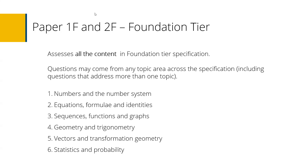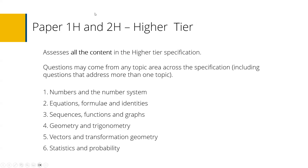For the higher tier, all content can be assessed and the topics are the same as the foundation. Questions at grades four and five are common to both foundation and higher tiers — that's the crossover. The last 40 marks of the foundation paper will be the first 40 marks of the higher paper. If your students can access those 40 marks at the end of foundation, it's worth considering entering them for higher tier.